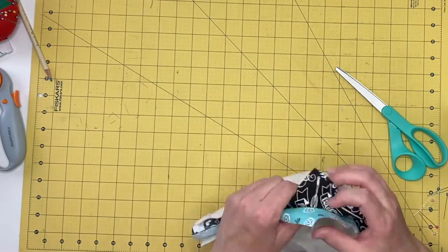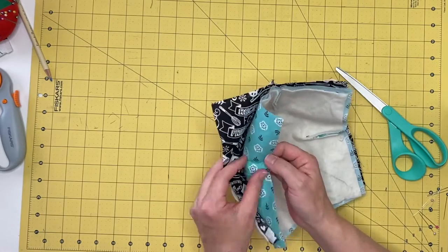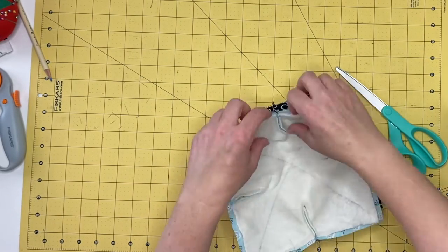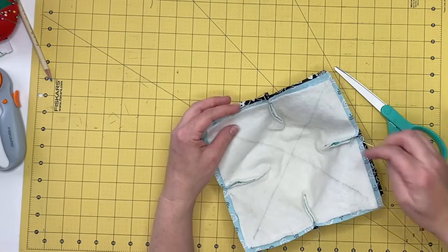Place one bowl cozy inside the other, making sure that the right sides of the fabric are touching. Pin all the way around the edges of the bowl cozy.